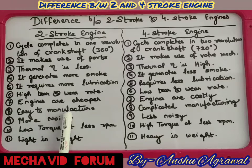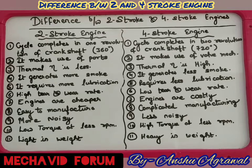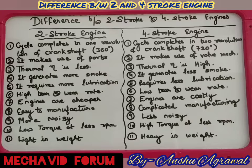Two-stroke engines are easy to manufacture, whereas four-stroke engines are complicated in manufacturing. Two-stroke engines are small in size and light, making them easier to build. Four-stroke engines, because they generate more power, require a water jacket for cooling, and the associated molding and casting make manufacturing more costly and complicated.